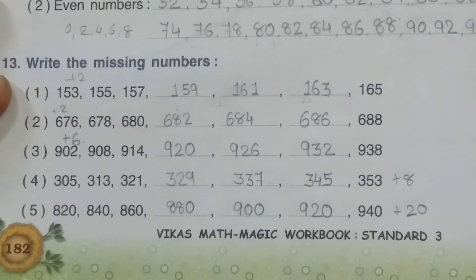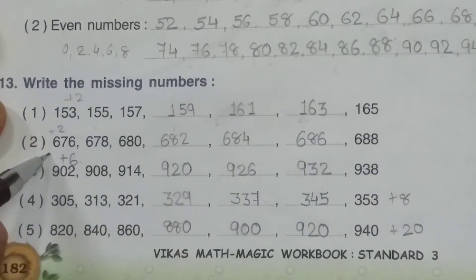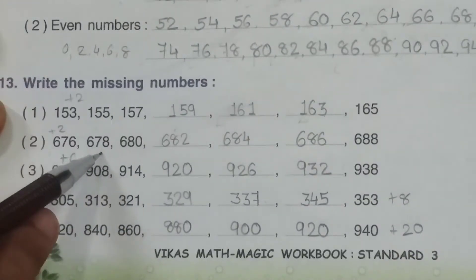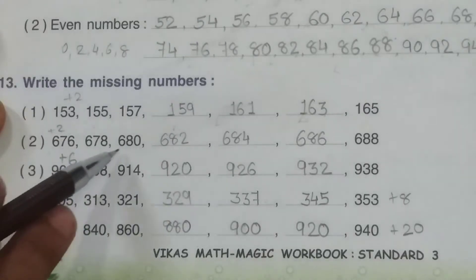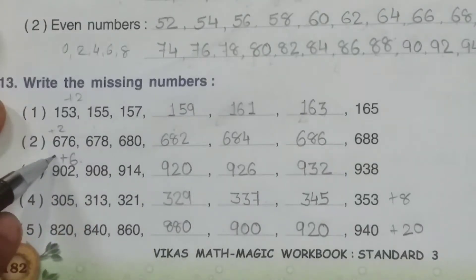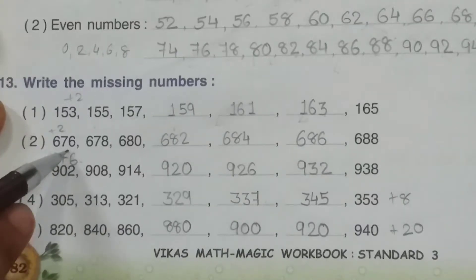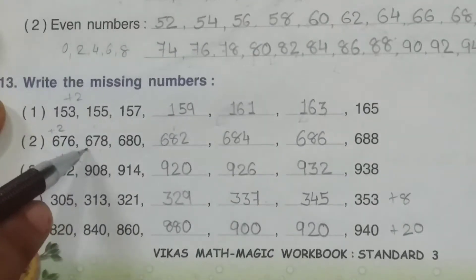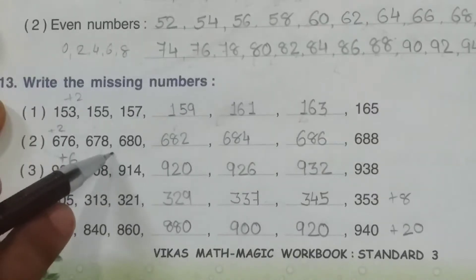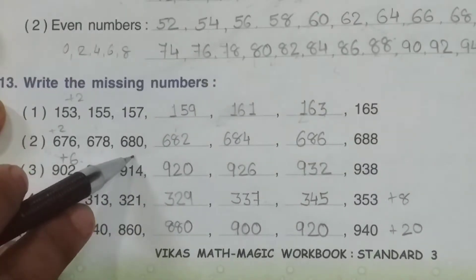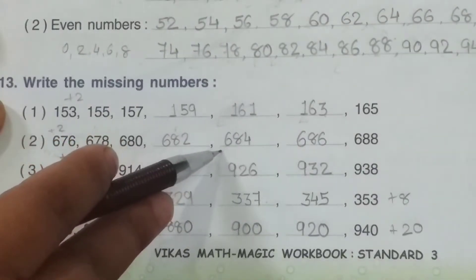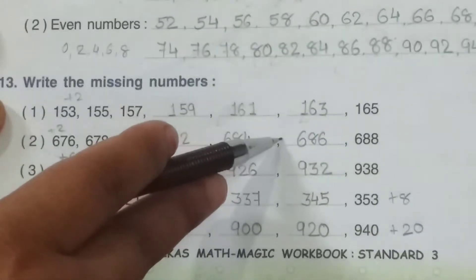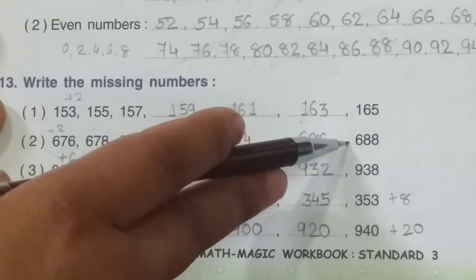Now see the second one: 676, 678, 680. Again, see the difference — numbers are increasing, so addition. The difference is plus 2. So, 676 plus 2 = 678, plus 2 = 680, plus 2 = 682, plus 2 = 684, plus 2 = 686, plus 2 = 688.